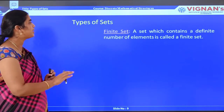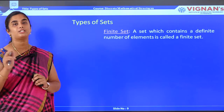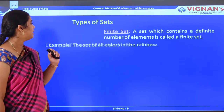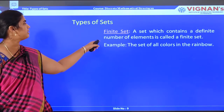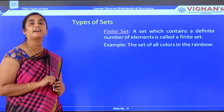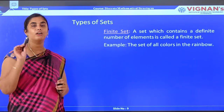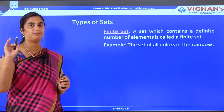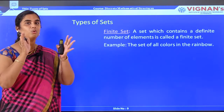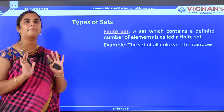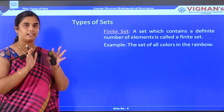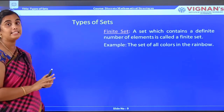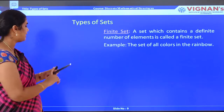Next is the finite set. A set which contains a definite number of elements is called a finite set. For example, the set of colors in a rainbow — as we know, the rainbow contains 7 colors (VIBGYOR). These are fixed elements and no one can add to that set, hence it is called a finite set.